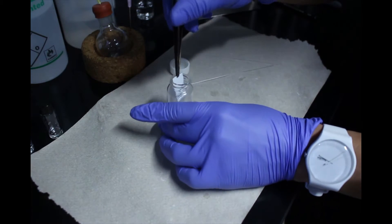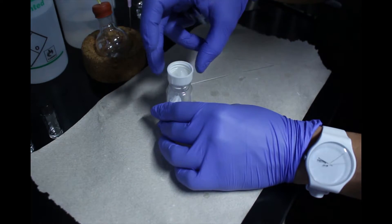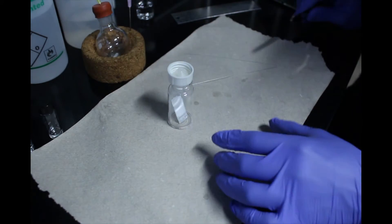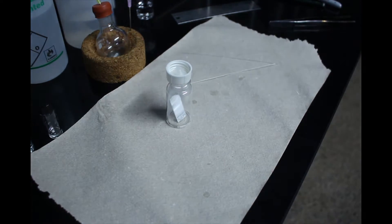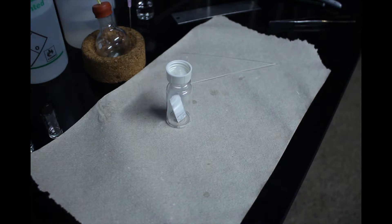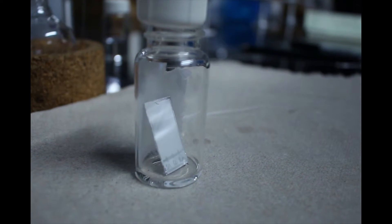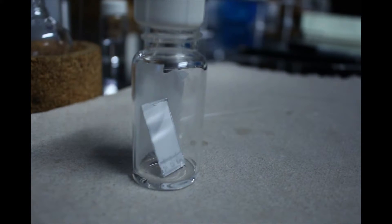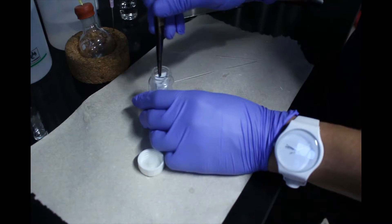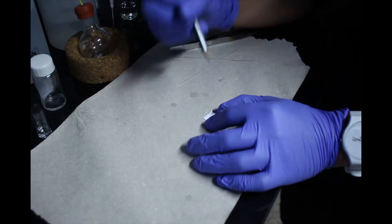With tweezers, carefully place the TLC plate leaning against the wall of your TLC chamber. Replace the cap and do not disturb the chamber as the solvent travels up the plate. Once the solvent has traveled up the plate close to the top, carefully remove the plate and mark the solvent front with a pencil.